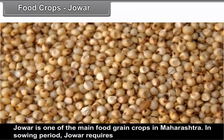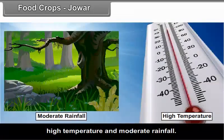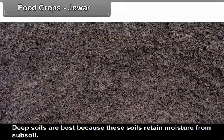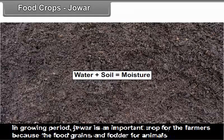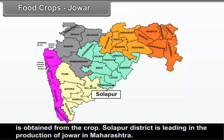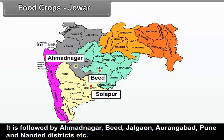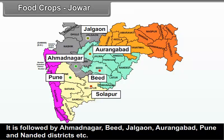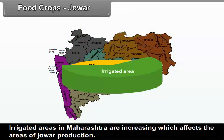Jowar: Jowar is one of the main food grain crops in Maharashtra. In the sowing period, jowar requires high temperature and moderate rainfall. Deep soils are best because they retain moisture from the subsoil. Jowar provides food grains as well as fodder for animals. Solapur district is leading in the production of jowar, followed by Ahmadnagar, Bid, Jalgao, Aurangabad, Pune, and Nandurbar districts. Increasing irrigated areas are affecting jowar production, as land formerly used for jowar is now being used for commercial crops.